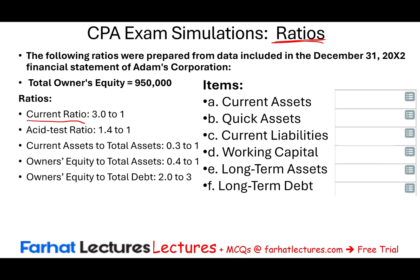It's very important that you understand how these ratios are structured. Knowing the formula helps, but I've seen simulations where they actually give you the formula, so they don't expect you to memorize it. That said, I would always know certain key ratios: current ratio, acid test ratio, and gross profit margin. In this simulation, what they're asking us to compute is current assets, quick assets, and current liabilities — they give you the ratios and want you to work backward to answer the questions.